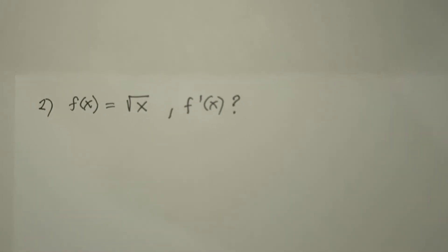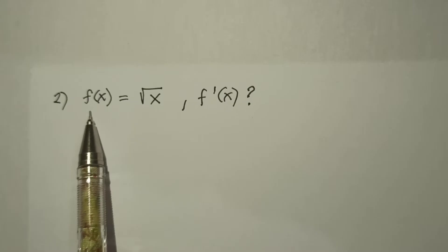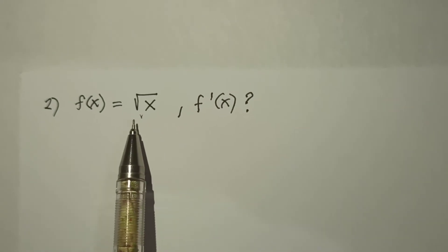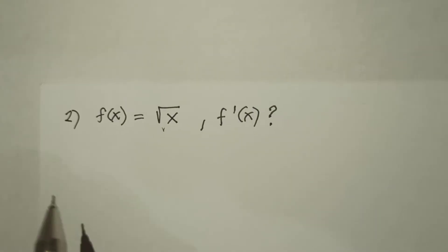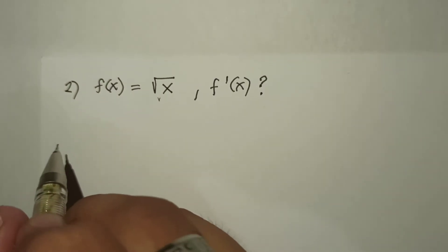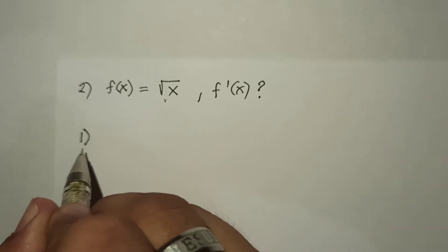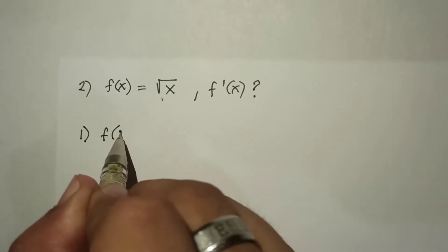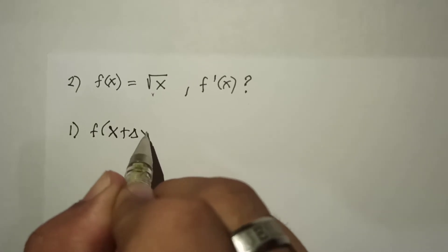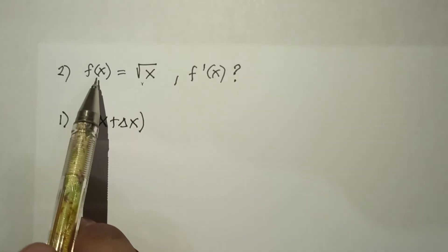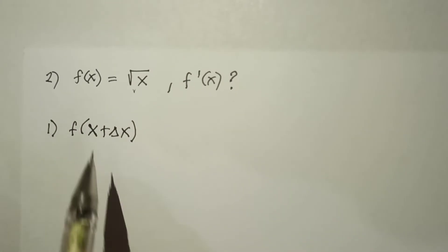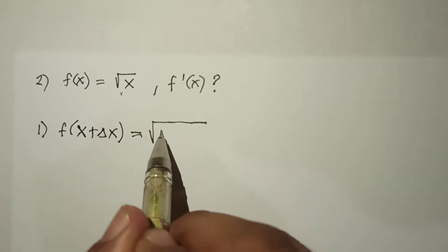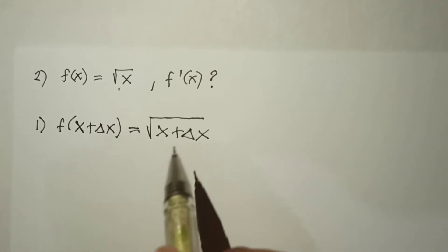We are now in problem number 2: find the derivative of f(x) = √x. Following the first step, f(x + Δx): we substitute x + Δx for x, so the result is √(x + Δx).